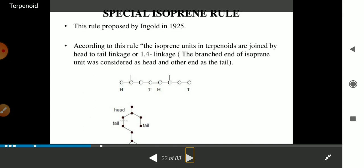The special isoprene rule was proposed in 1925. According to this rule, isoprene units in terpenoids are joined by head-to-tail linkage or 1-4 linkage.